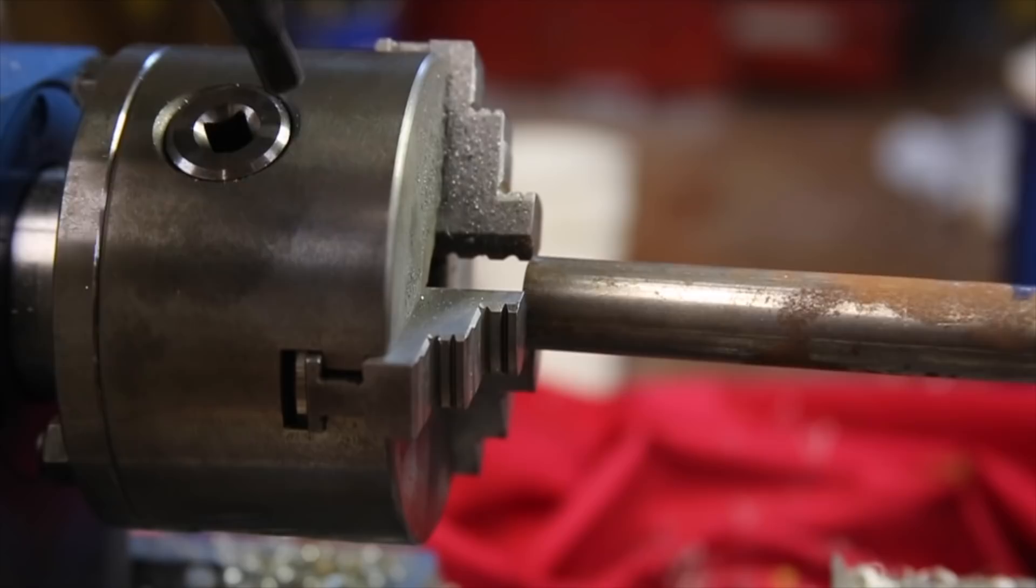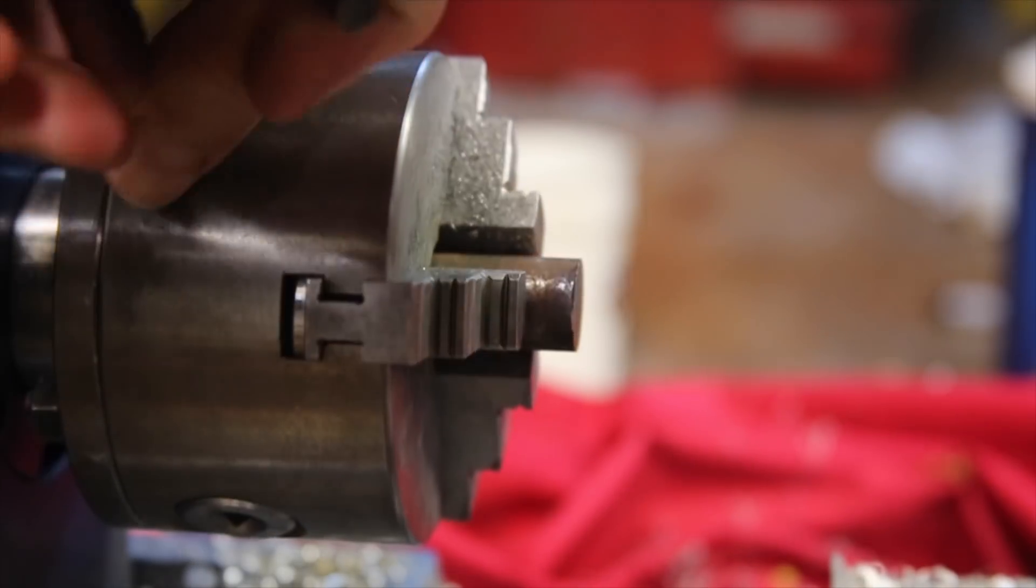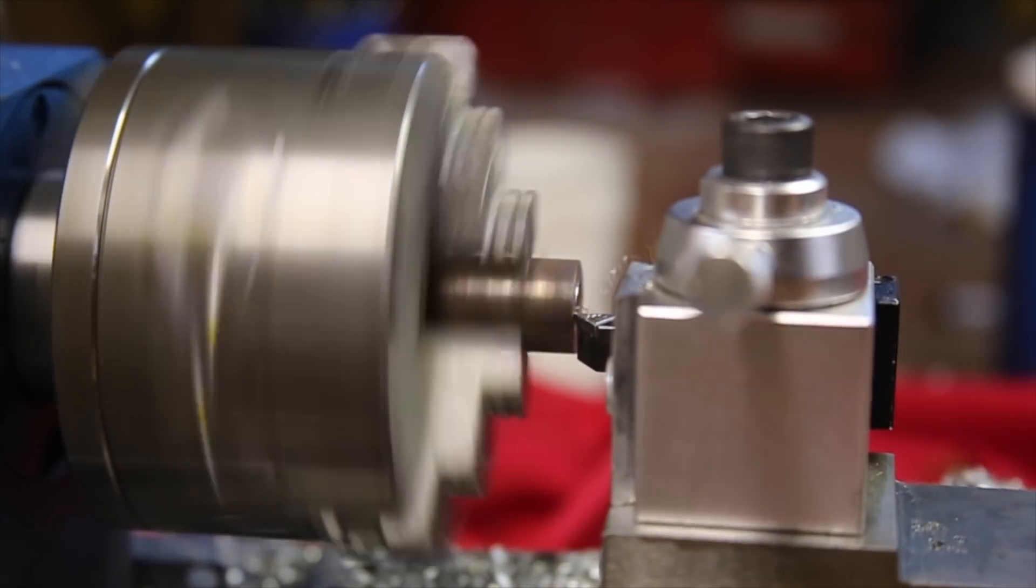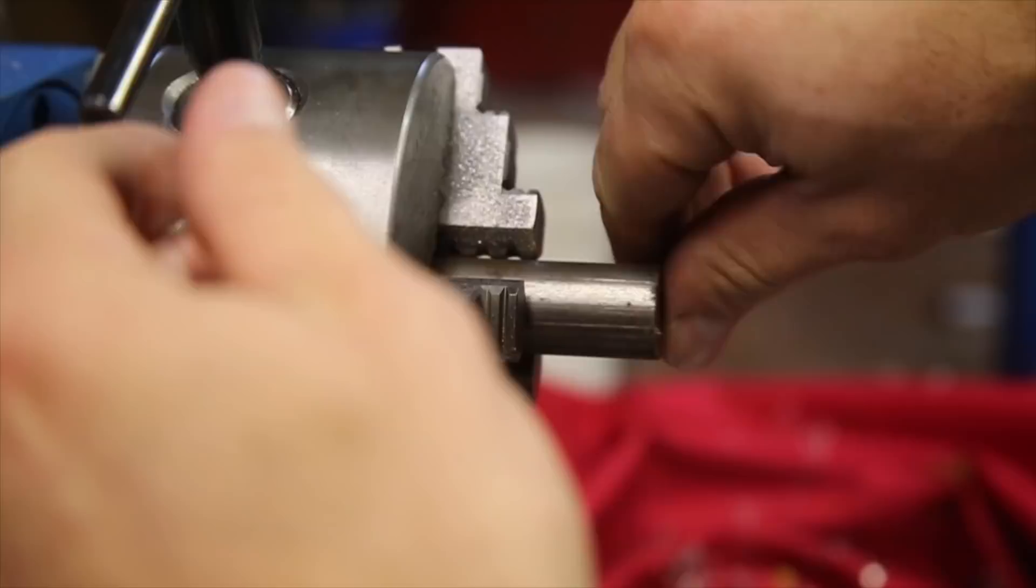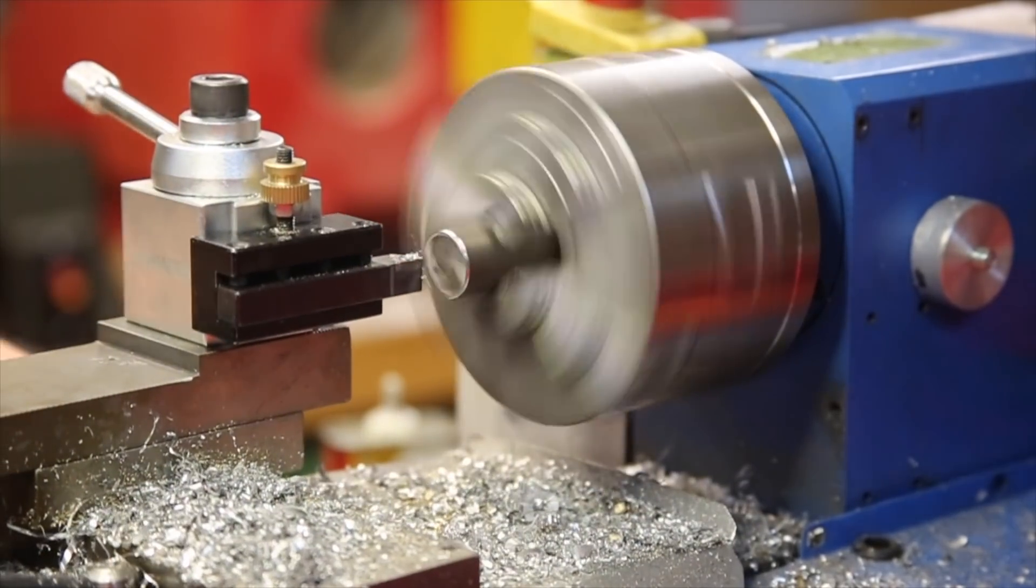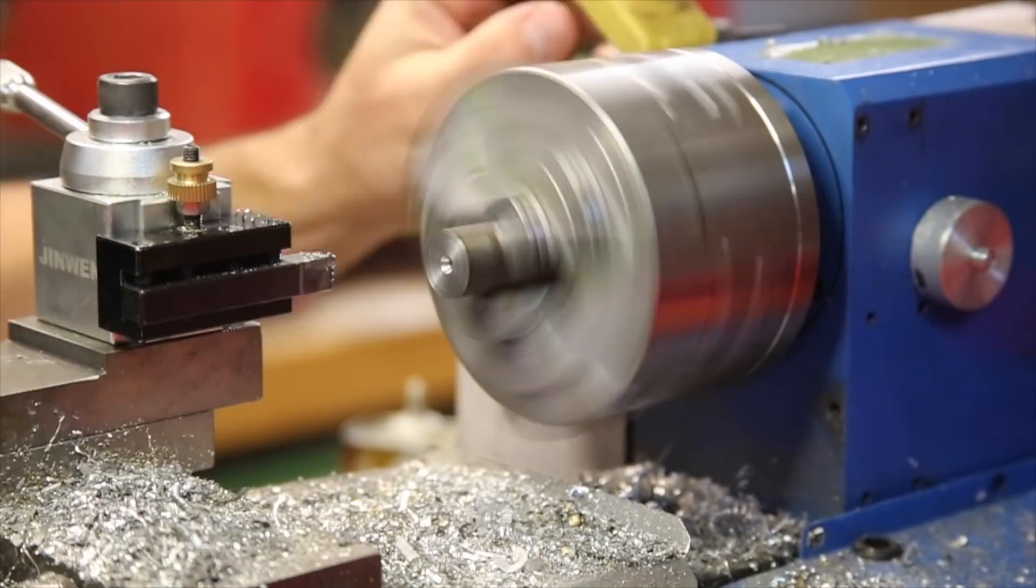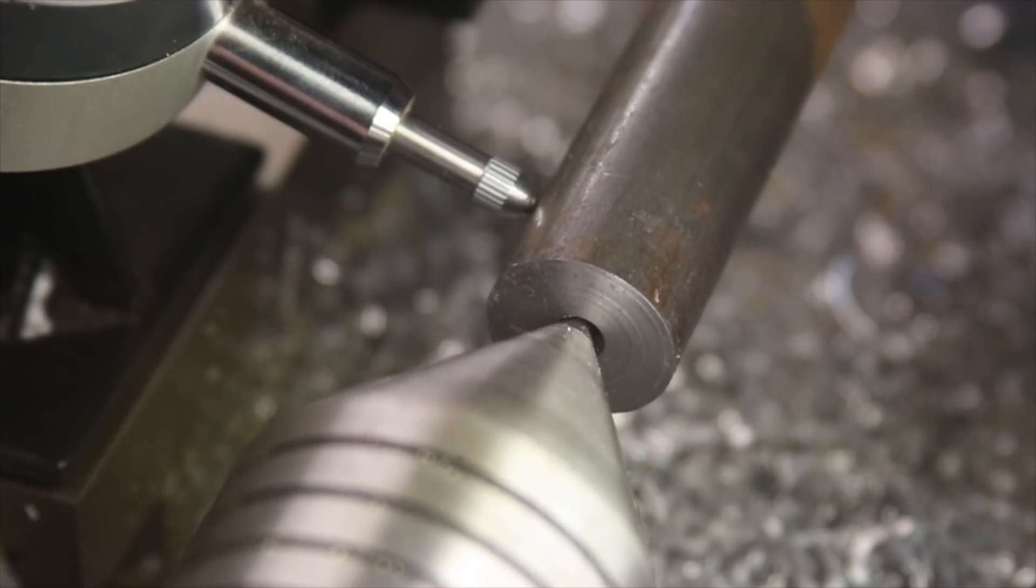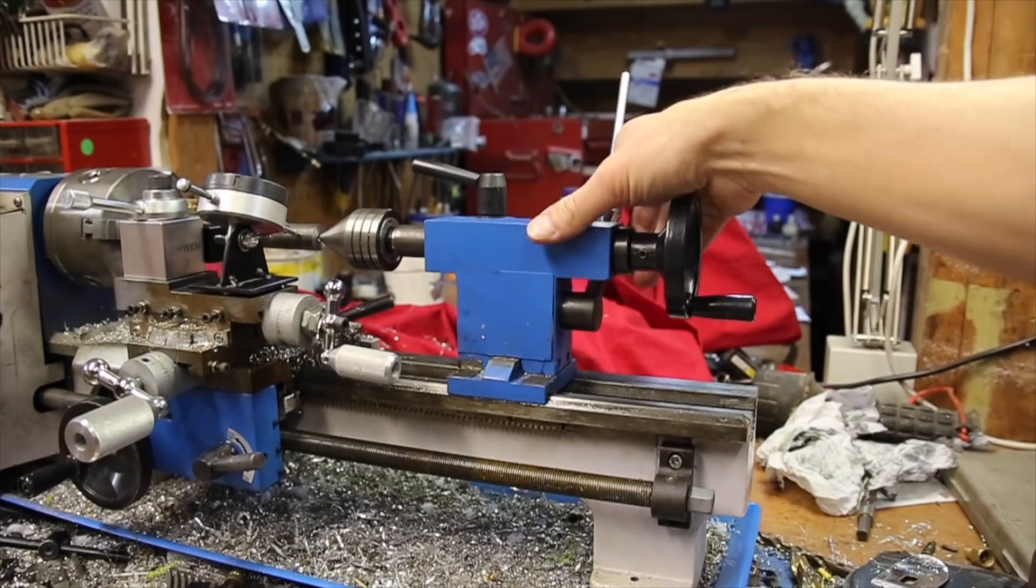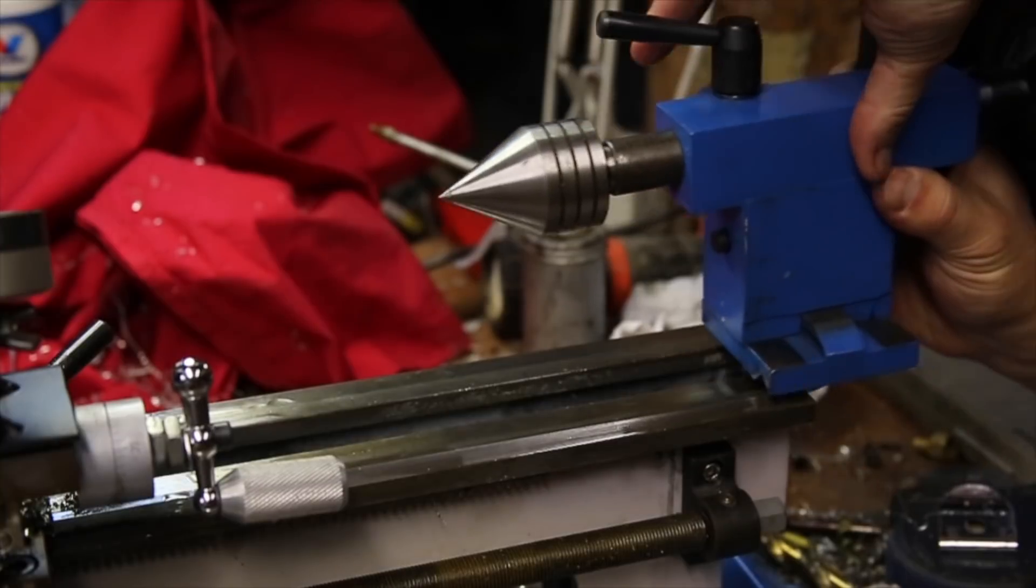To start off, I faced and center drilled both ends of the round stock. Since there is a decent amount of stick out and I needed to be sure the guide side of this part is as square as possible, I decided to use the live center, but the tailstock was pretty far out of alignment. I figured that aligning a tailstock could be independently useful so I added that as a separate video that I'll link below.